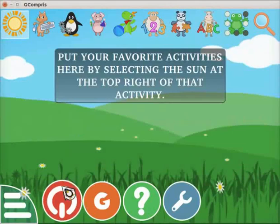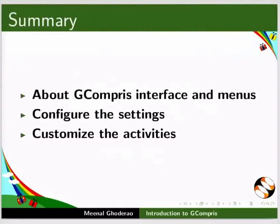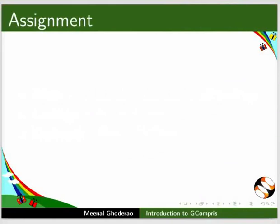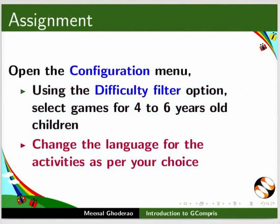The quit icon at the bottom of the interface is used to quit the Gcompry application. We can also use Ctrl and Q keys together on the keyboard to quit. In this tutorial, we have learnt about Gcompry interface and menus, how to configure the settings, and how to customize the activities. As an assignment, open the configuration menu, use the difficulty filter option to select games for 4 to 6 year old children, and change the language for the activities as per your choice.